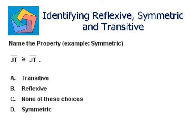Next problem: name the property. Segment JT is congruent to JT. I can say a is congruent to a if a equals segment JT. This type of property is known as the reflexive property.